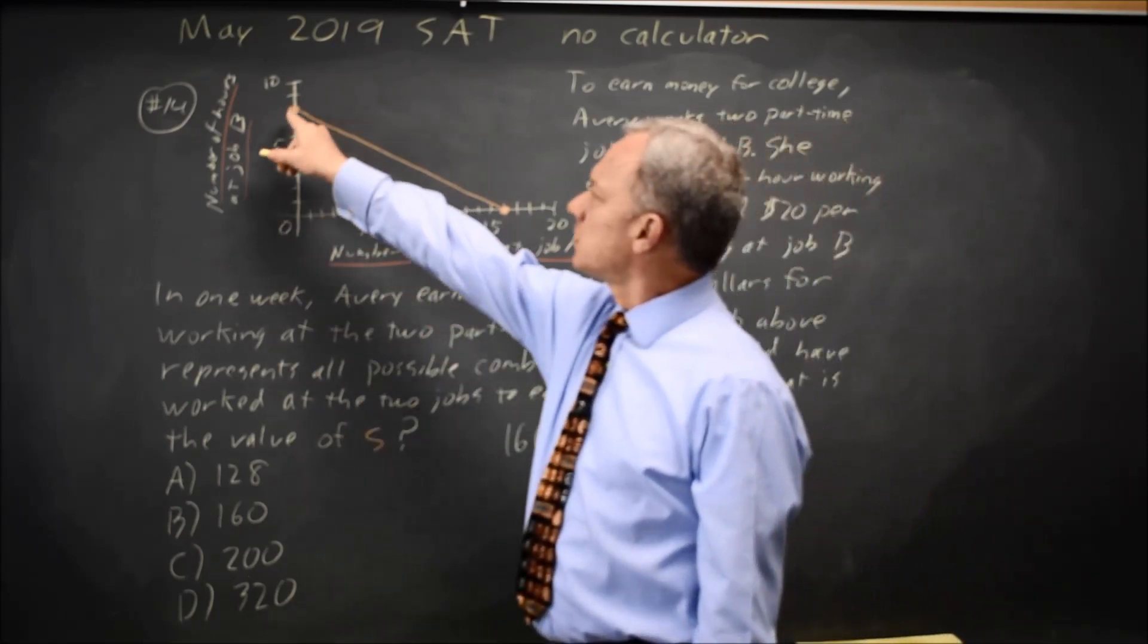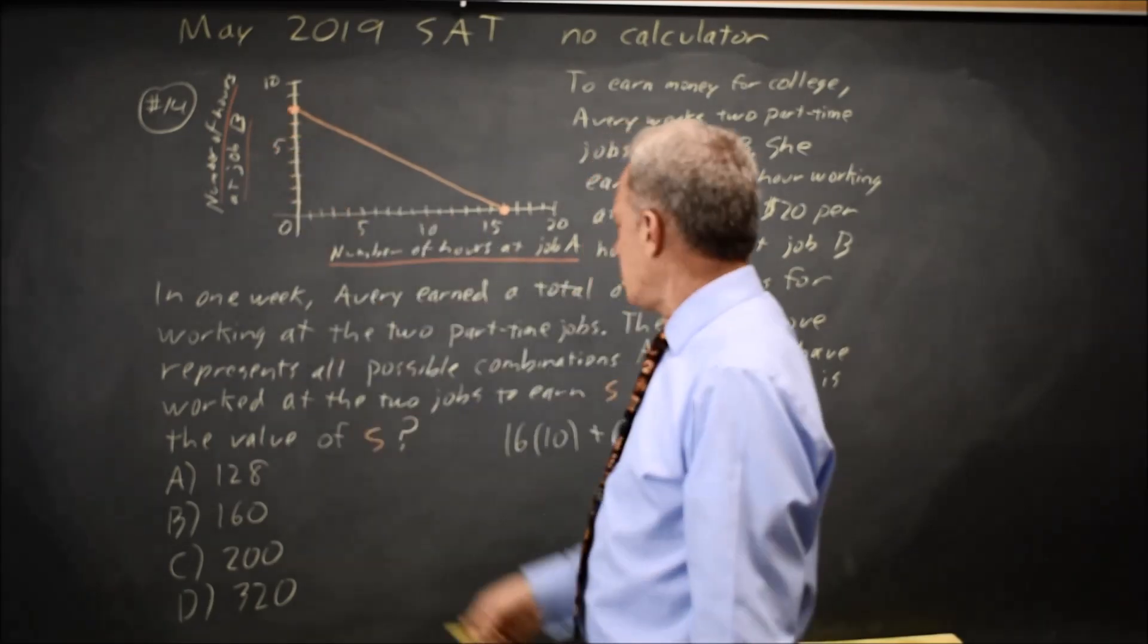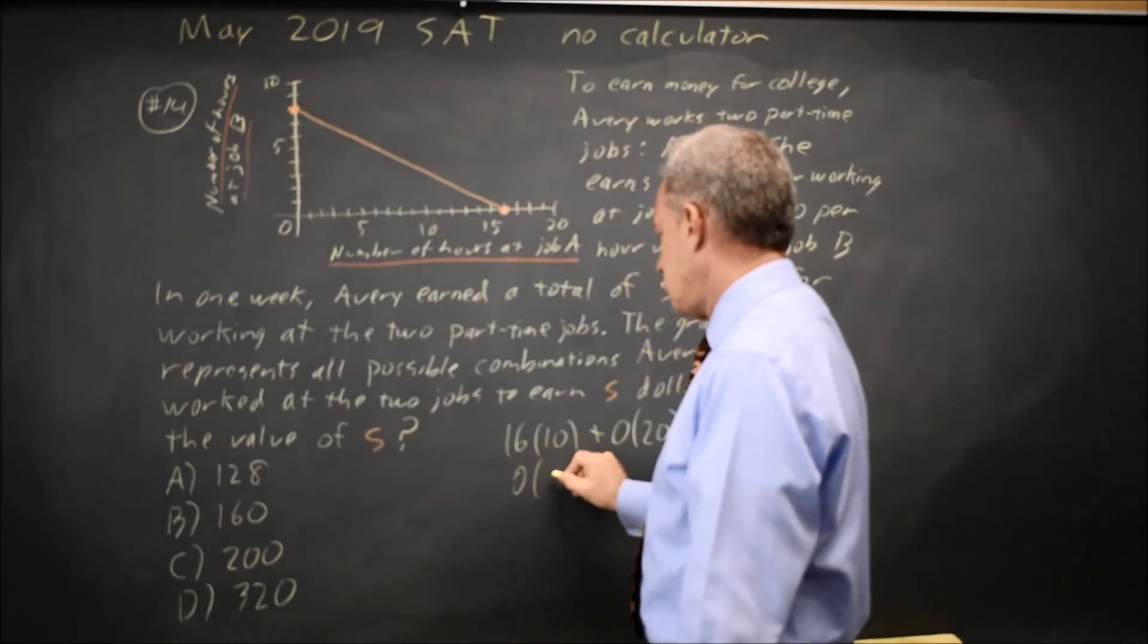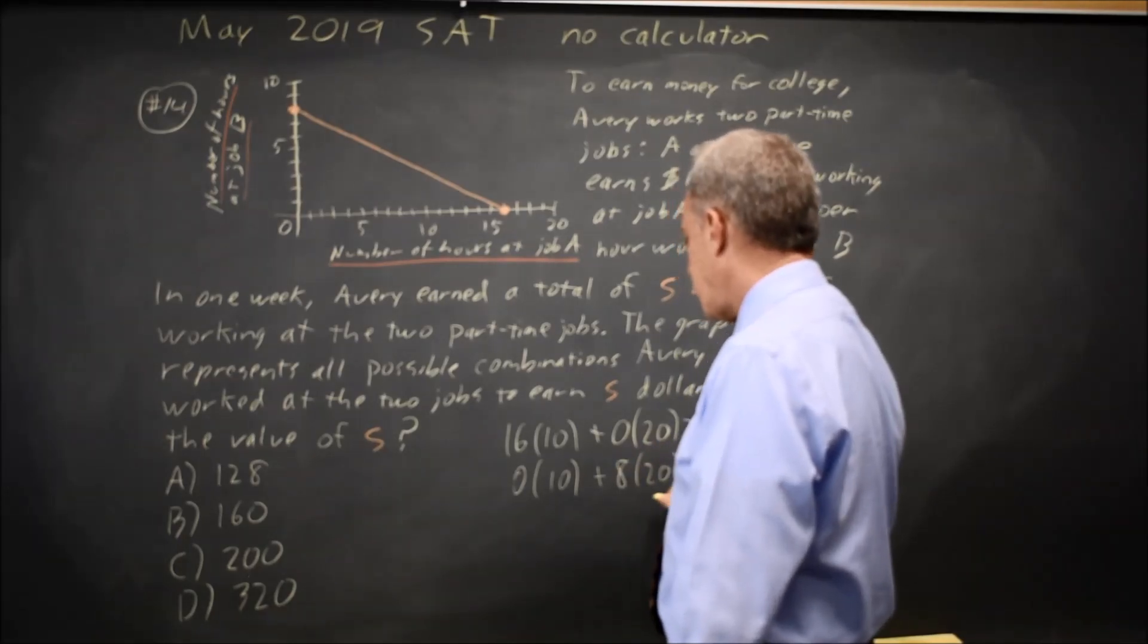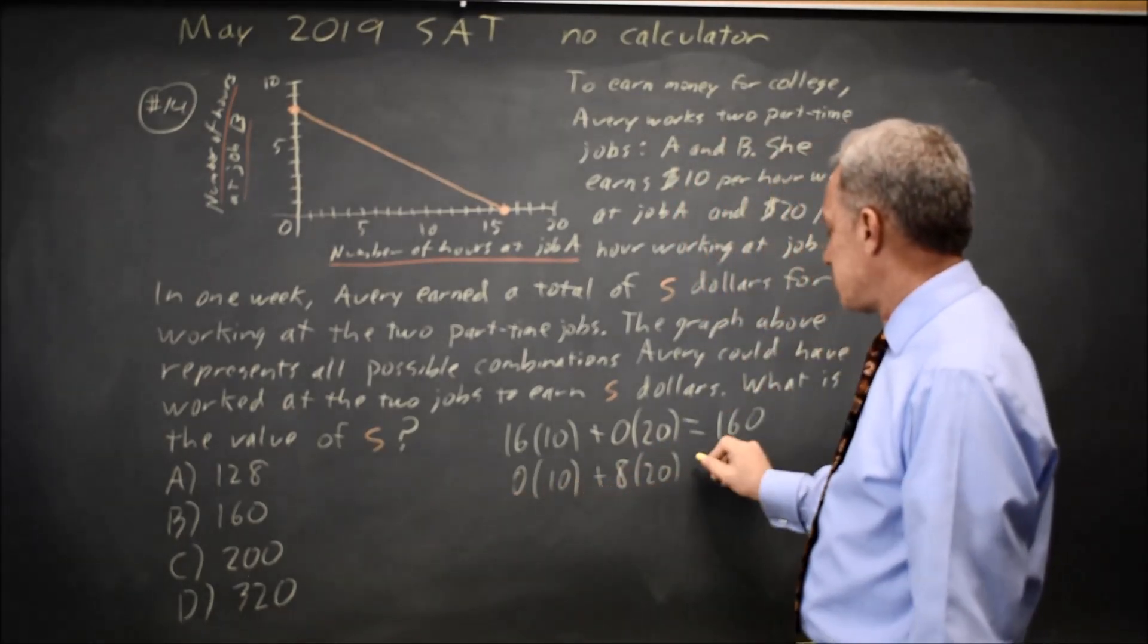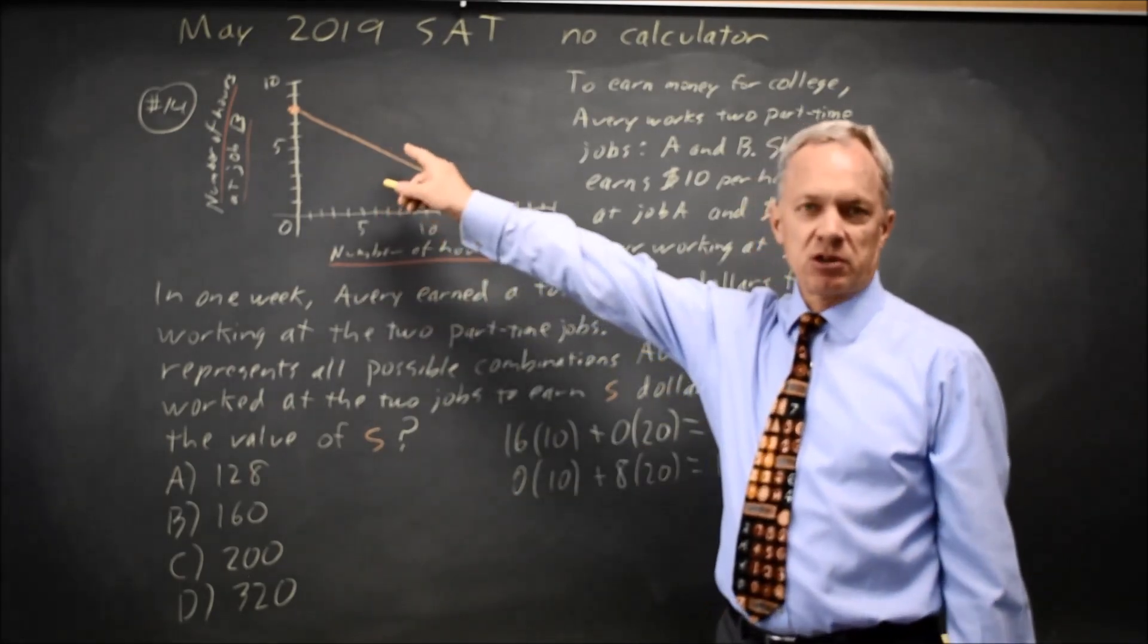At this point, zero hours at job A and eight hours at job B would be zero at $10 an hour plus eight at $20 per hour, which is zero plus 160, also 160. They're asking for the value of S, which is the total amount earned.